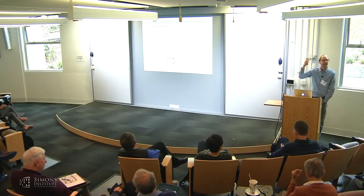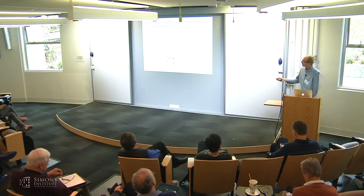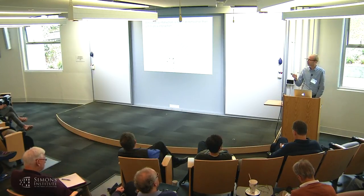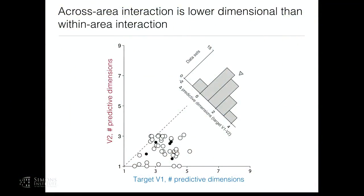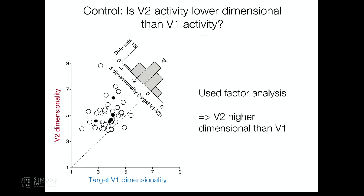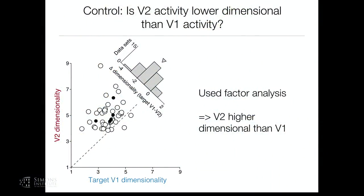We ran several controls ruling out trivial explanations: it's not that only a few V2 neurons can be predicted (it's a genuine population effect); sparse connectivity / physical bottleneck doesn't explain the result; adding a quadratic nonlinearity in V2 (a simple complex-cell model) doesn't explain it; subsampling effects in a large V1-V2 network don't reproduce it. So the communication subspace result appears to be a genuine property of inter-area communication.